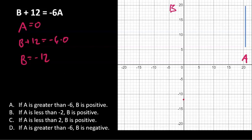Now if b is 0, then 12 equals minus 6a and a equals minus 2. So b is 0, a is minus 2.